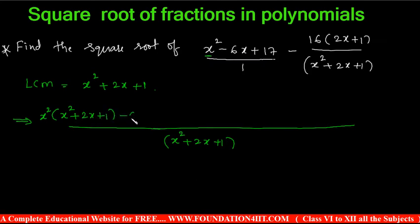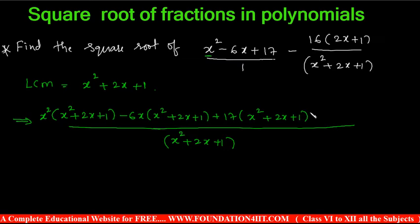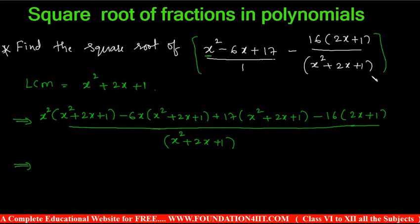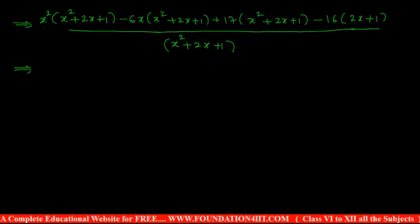The LCM — least common multiple — is 1, and x squared plus 2x plus 1 is the LCM. The complete denominator is x squared plus 2x plus 1. The numerator is x squared minus 6x plus 17, and this full part we should multiply with x squared plus 2x plus 1. Then for minus 6x, same x squared plus 2x plus 1. For 17, same x squared plus 2x plus 1. This is LCM, minus 16 of (2x plus 1) only will come. If we can make the complete given question into numerator by denominator, we can take separate polynomials and find out the square root.